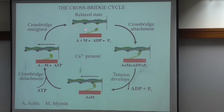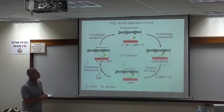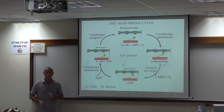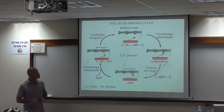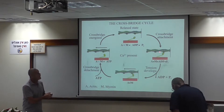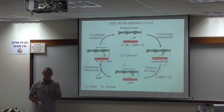In the resting state, the myosin crossbridge is energized, but there is no interaction between myosin and actin, because tropomyosin, a very long protein, sits on top of the binding site on actin. Once calcium increases, calcium binds to another protein called troponin, which moves tropomyosin out and allows interaction between the myosin crossbridge head and actin. At this point, the binding is weak. When inorganic phosphate is released, we have a strong binding that occurs, and this is the phase where tension occurs.